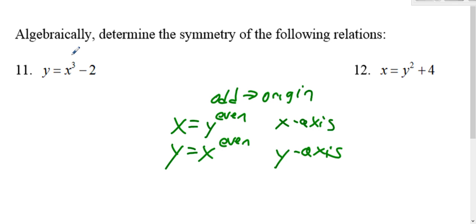For y equals x to the third, that's an odd. Minus two - two doesn't have an x, it's got x to the zero on it. x to the zero is an even. We have an odd and an even, which is a mixture, which means it's got no symmetry.